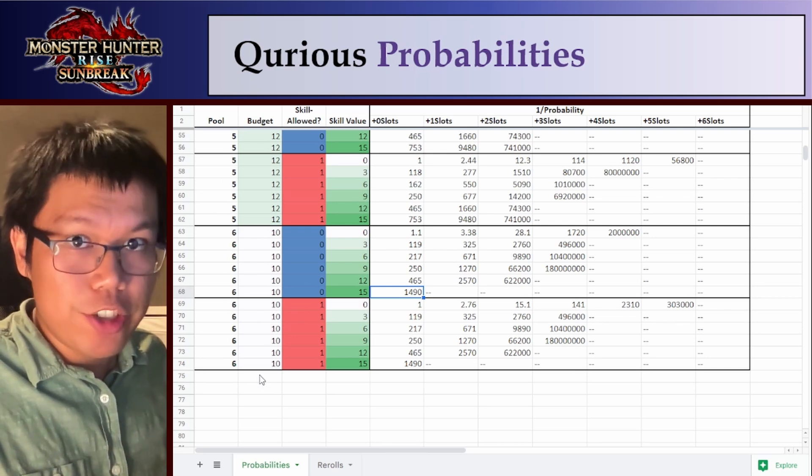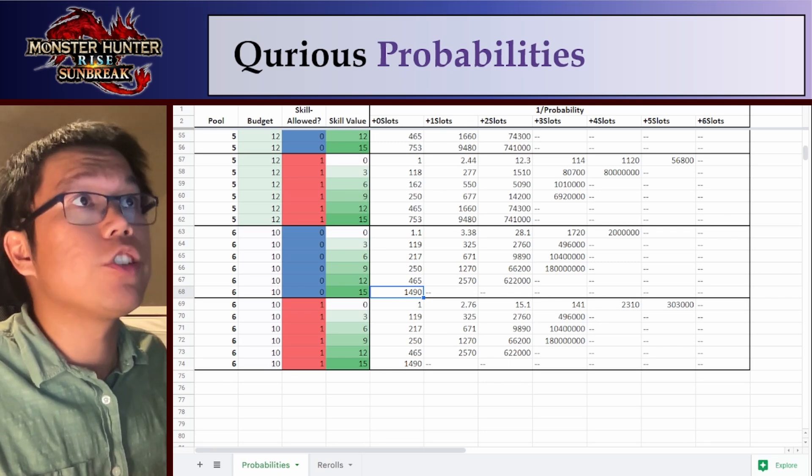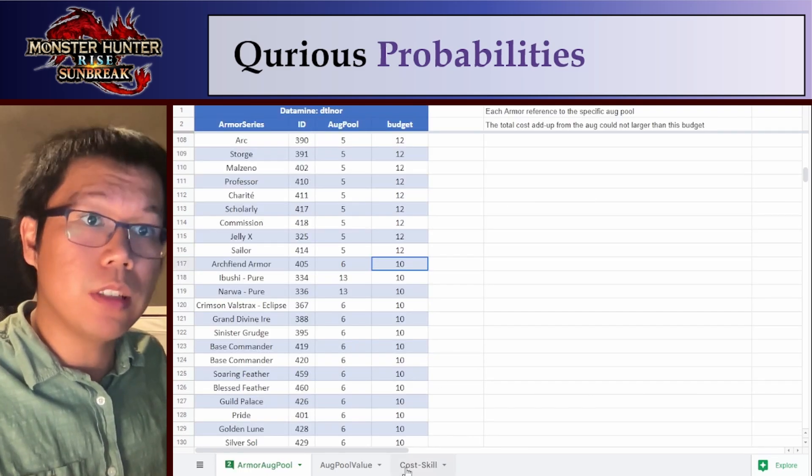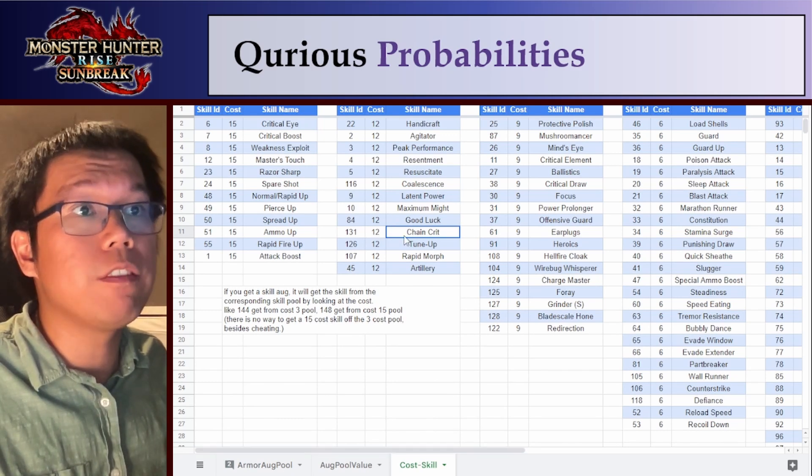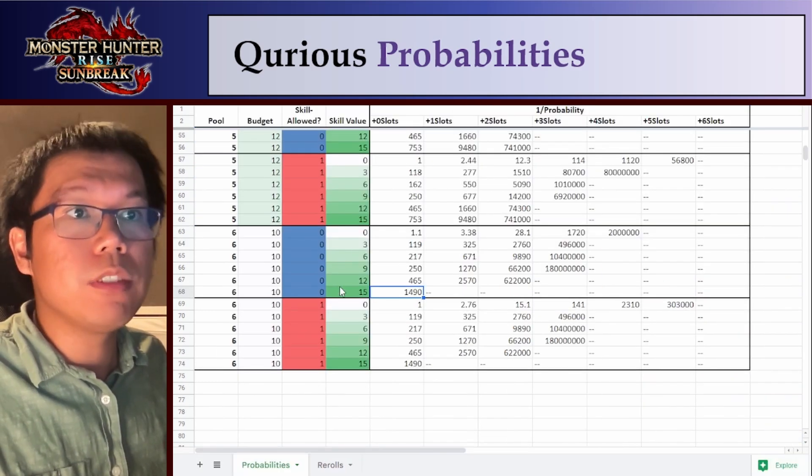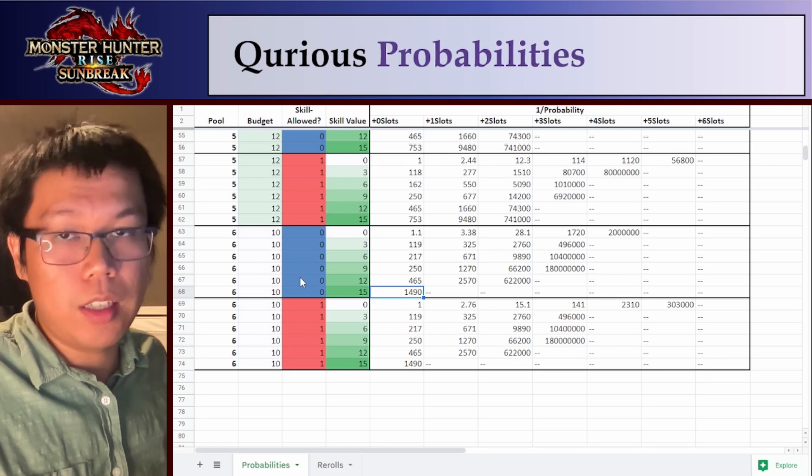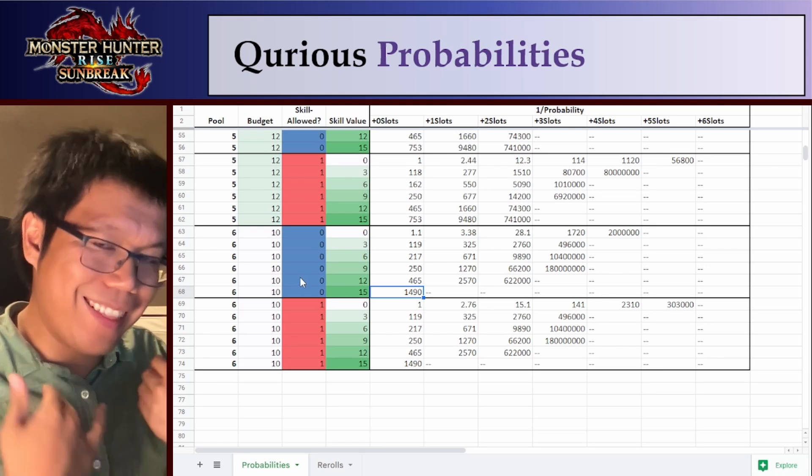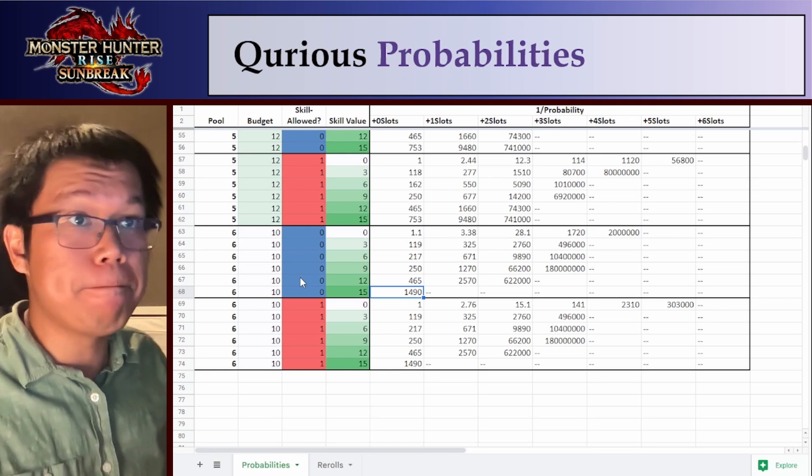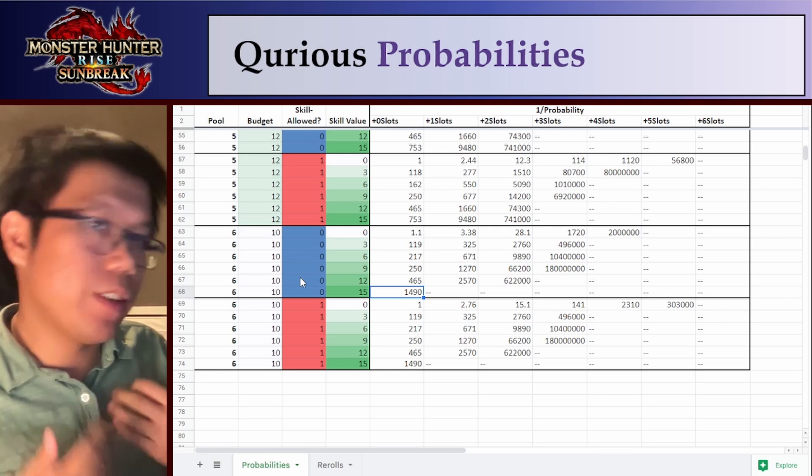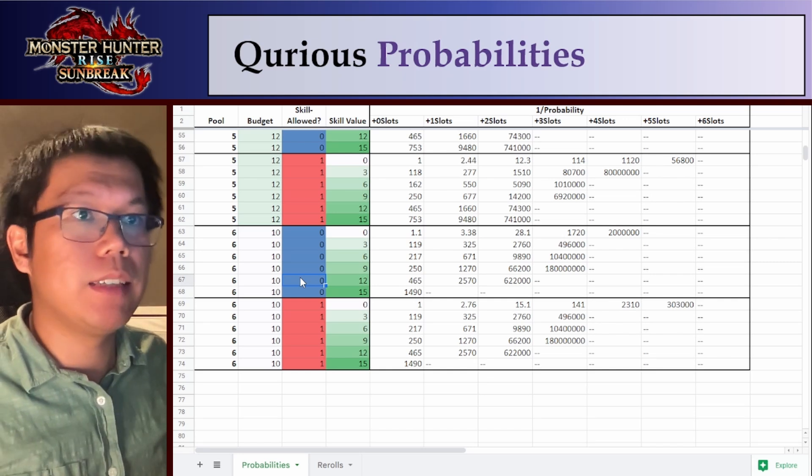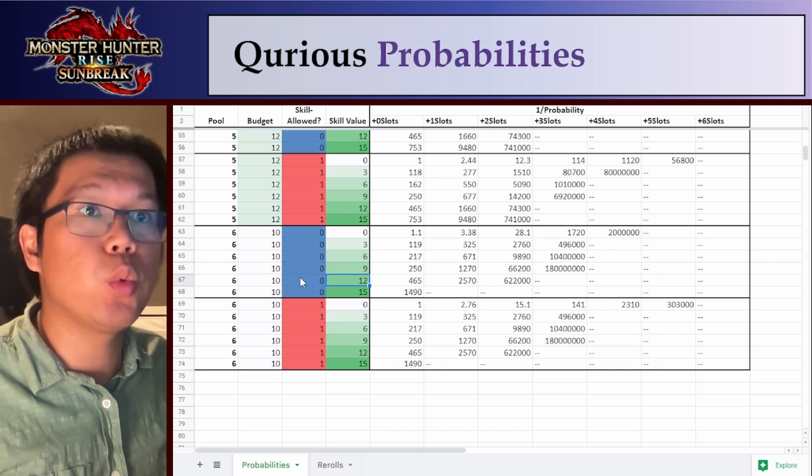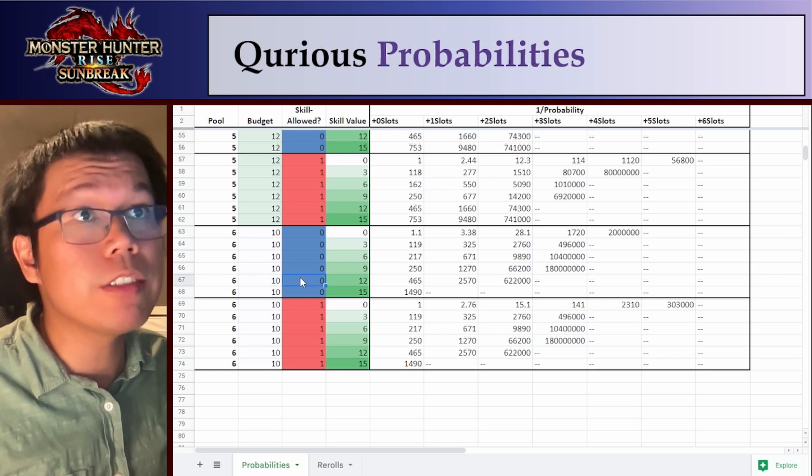So back to my sheet, we want to look for pool 6 with budget 10. If we wanted the skill chain crit, we want to see the value of the skill chain crit. So the value according to Tilnor and the cost skill is 12 for chain crit. So value 12.